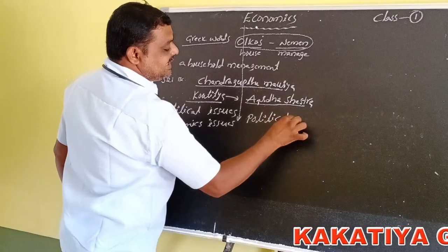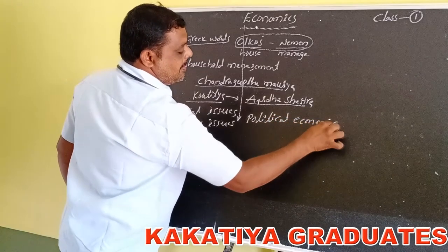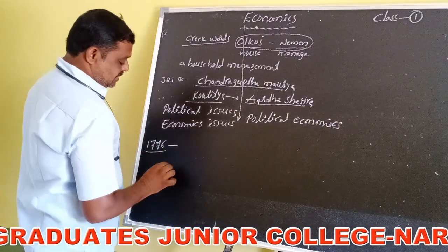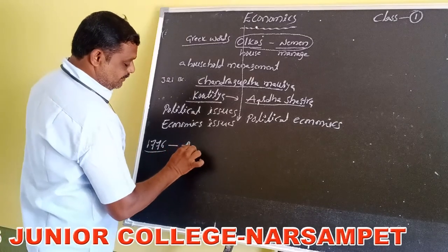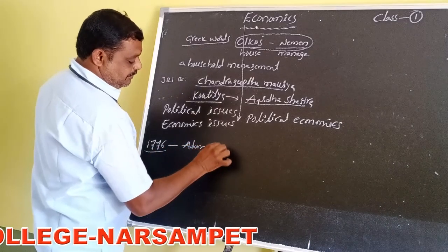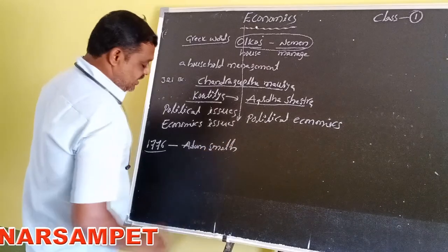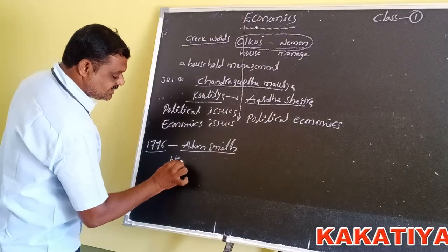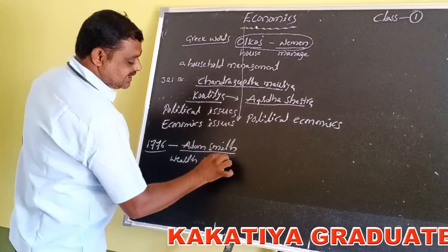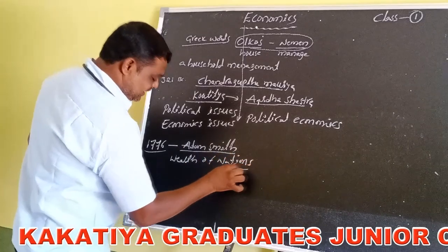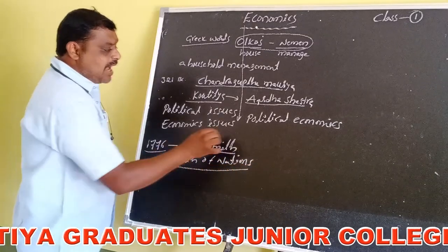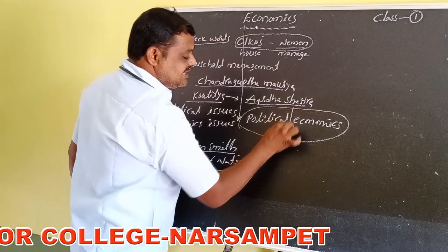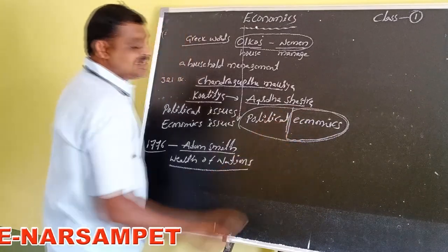After that, in 1776, a great Scottish philosopher Adam Smith wrote a great book called Wealth of Nations. In Wealth of Nations, Adam Smith argued that economics is not political science — economics is a separate science.